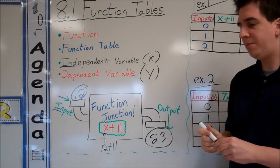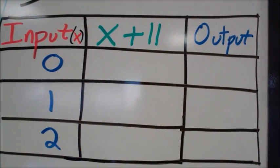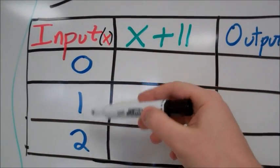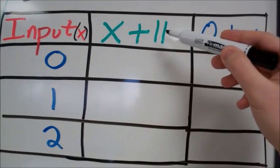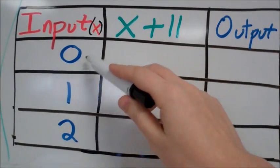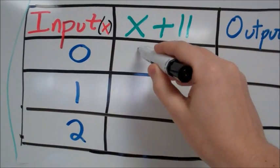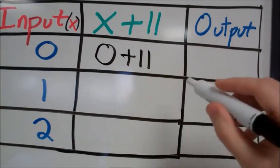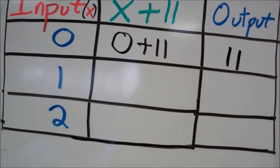Then we're going to look at a couple examples. In our first example, we have to complete this table. We have three inputs given for x. We have our function, and then we have our output. Our function, we're going to plug in that number. We're substituting. So x is 0 here, plus 11. 0 plus 11. I put 0 into the machine and 11 comes out.